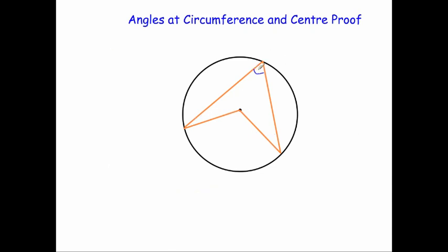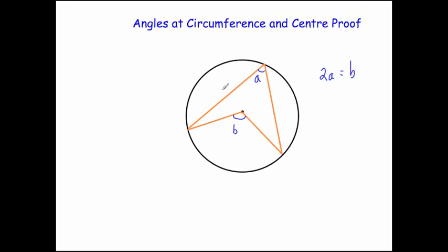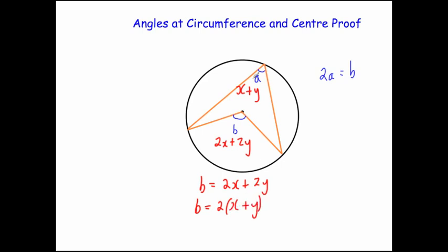So the angle at the bottom is twice the angle at the top. Therefore, no matter what size the angles are, the angle at the centre will always be twice the angle at the circumference. We know B equals 2X plus 2Y, and A equals X plus Y. Factorizing: B equals 2(X plus Y) equals 2A. That's our proof — B equals 2A.